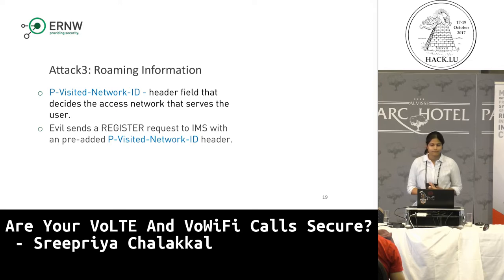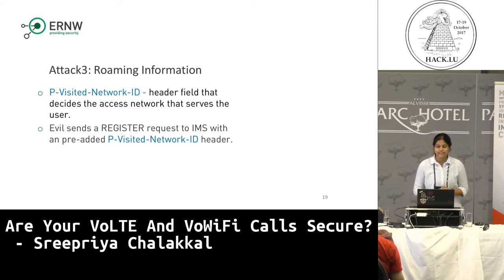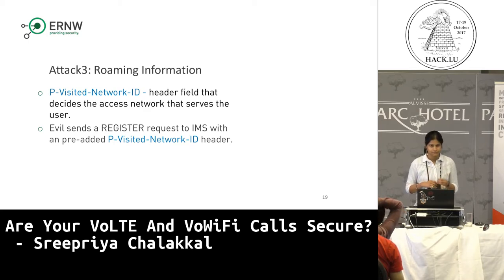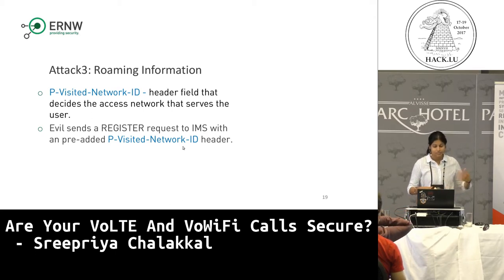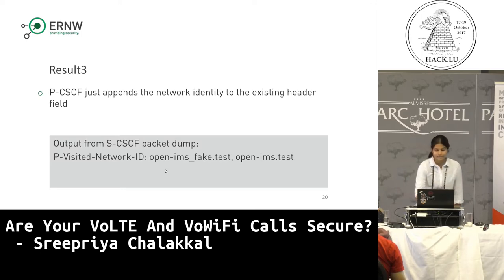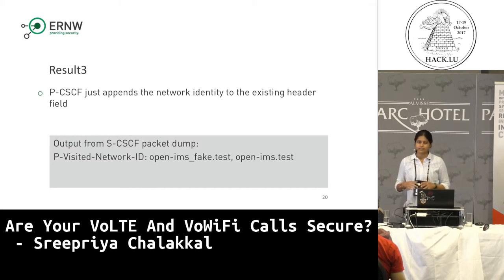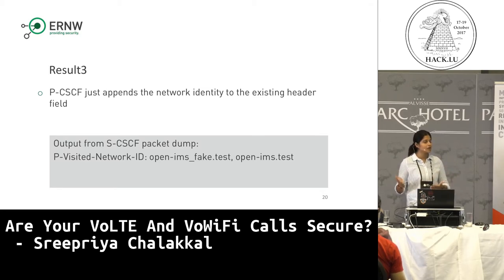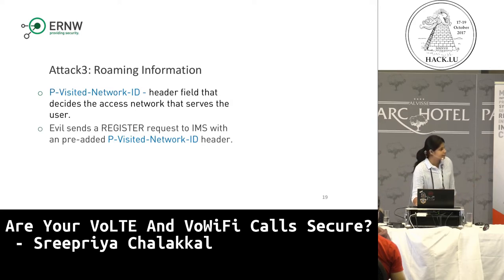Another interesting attack involves roaming information. There is a header called p-visited-network-id. This header is not supposed to come from the user end — it is added only at the access point layer. But if an attacker injects this header from the user end, we found that at the OpenIMS side the fake domain is not removed; instead, the original one is just added later. Depending on how a provider's charging is implemented, an attacker could make roaming calls appear as local calls by changing this header value.